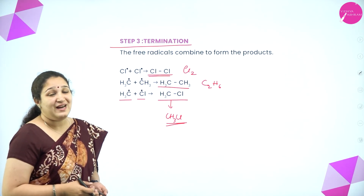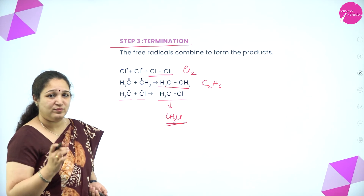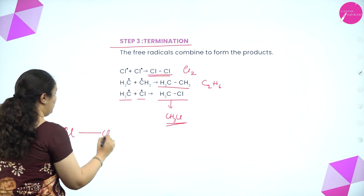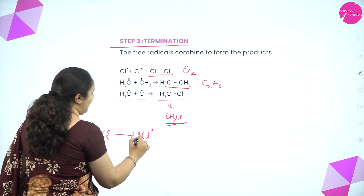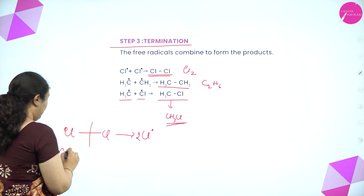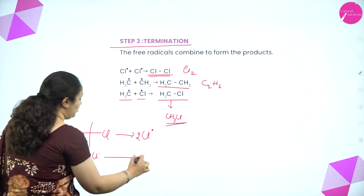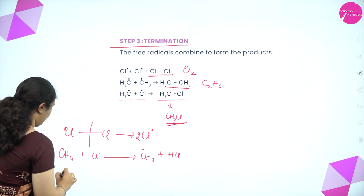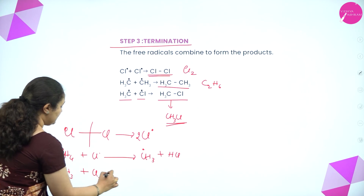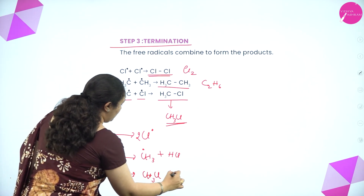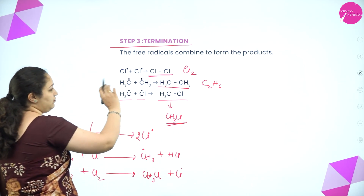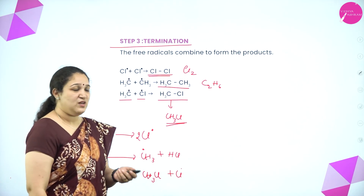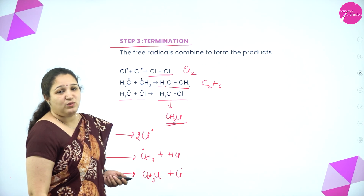To revise the mechanism of chlorination of methane: Step 1 (initiation) — Cl₂ undergoes homolysis to give chlorine free radicals. Step 2 (propagation) — methane reacts with Cl• to form CH₃• and HCl; CH₃• reacts with Cl₂ to form CH₃Cl and Cl•. Step 3 (termination) — all free radicals react with one another to form the respective compounds.